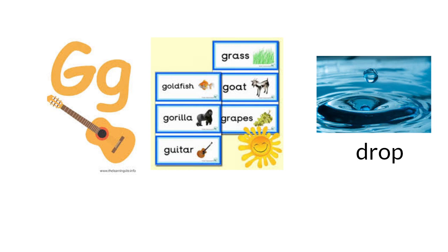Let's take a look at this letter. What letter is it? Guitar. And what about this? Goldfish. Gorilla. Guitar. Grass. Goat. Graves. All these words begin with G.